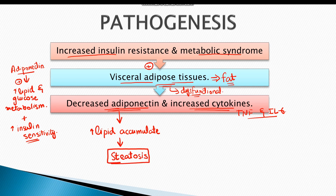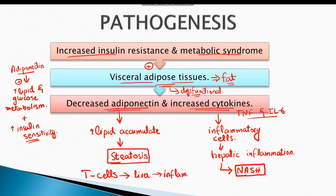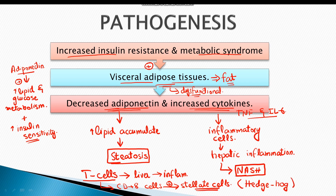The dysfunctional adipocytes also secrete cytokines such as tumor necrosis factor and interleukin-6. These cytokines recruit inflammatory cells and cause hepatic inflammation, resulting in non-alcoholic steatohepatitis or NASH. T cells are also recruited in the liver, contributing to inflammation. These killer T cells, also known as CD8 cells, activate the stellate cells via a specific pathway known as the hedgehog pathway. This activation of stellate cells results in fibrosis of liver tissue and ultimately liver cirrhosis.